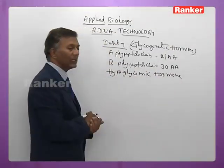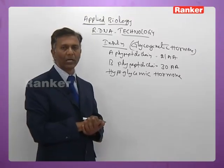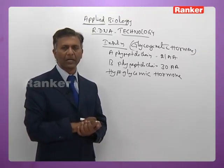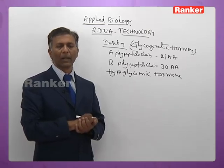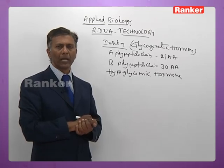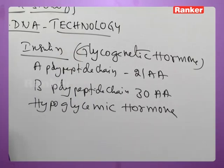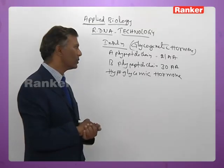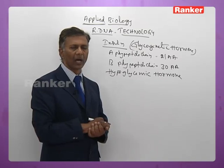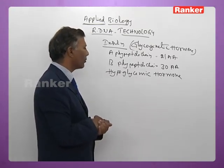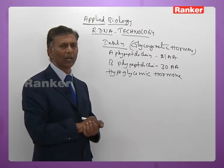Insulin therapy is used for both disorders of diabetes mellitus: mellitus type 1, called insulin-dependent diabetes mellitus (IDDM), and mellitus type 2, non-insulin-dependent diabetes mellitus (NIDDM). In both cases there is large-scale usage of insulin hormone. It is commonly called glycogenetic hormone or hypoglycemic hormone.